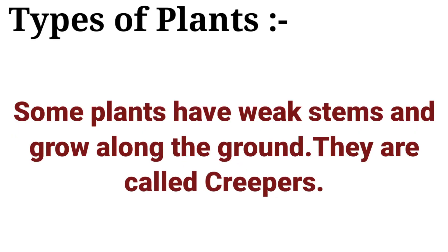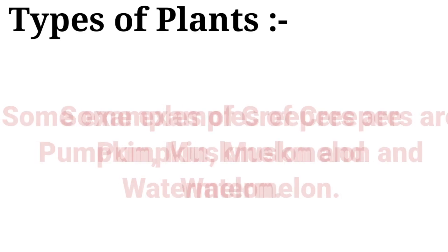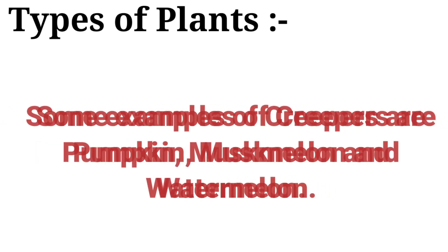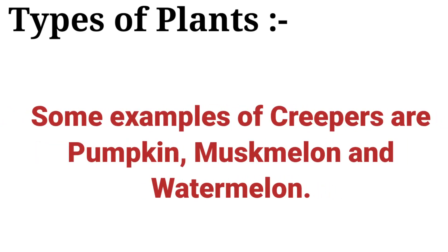Some plants have weak stems and grow along the ground. They are called creepers. Some examples of creepers are pumpkin, musk melon, and watermelon.